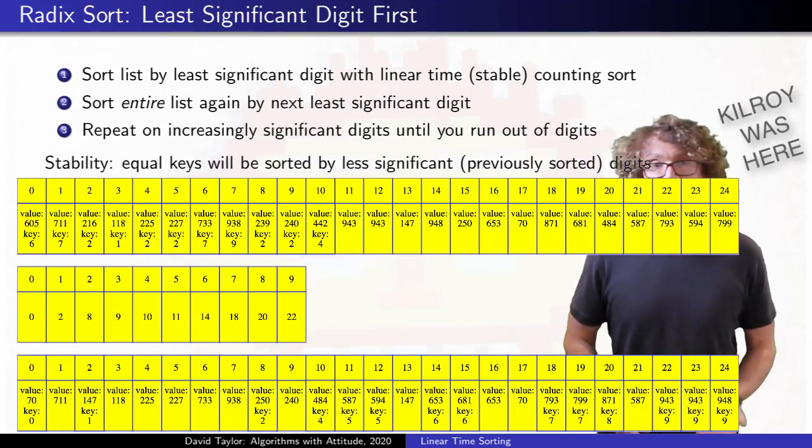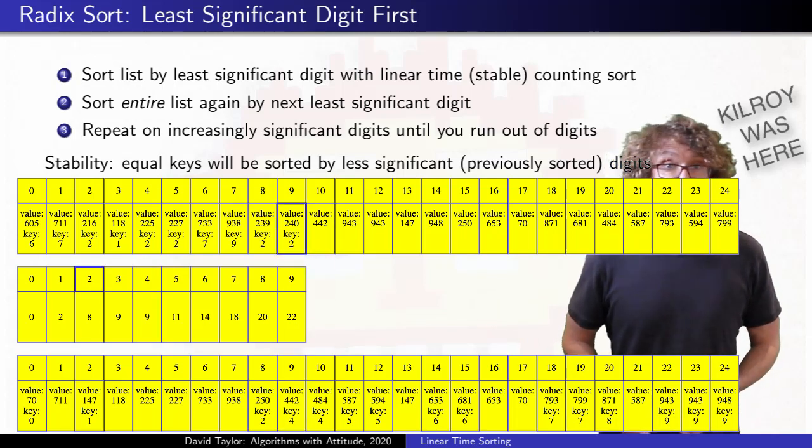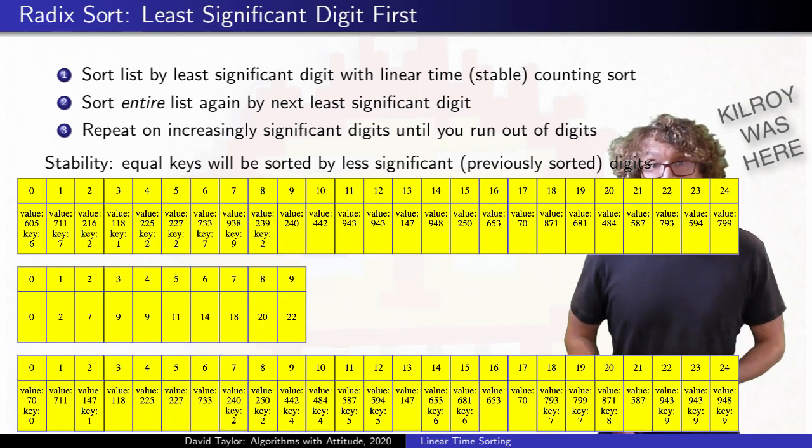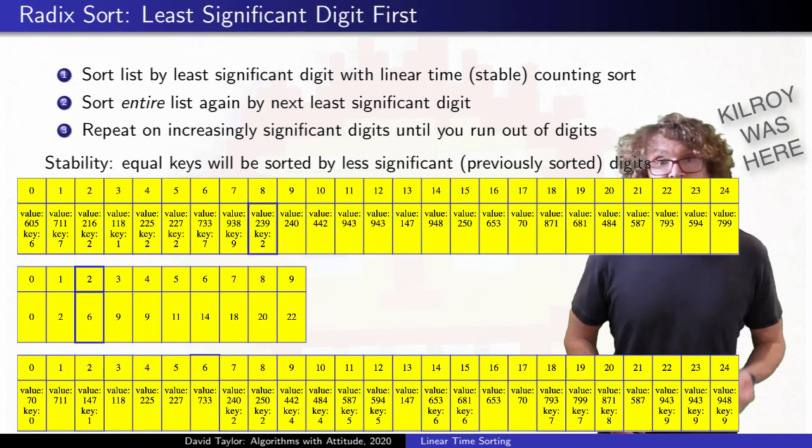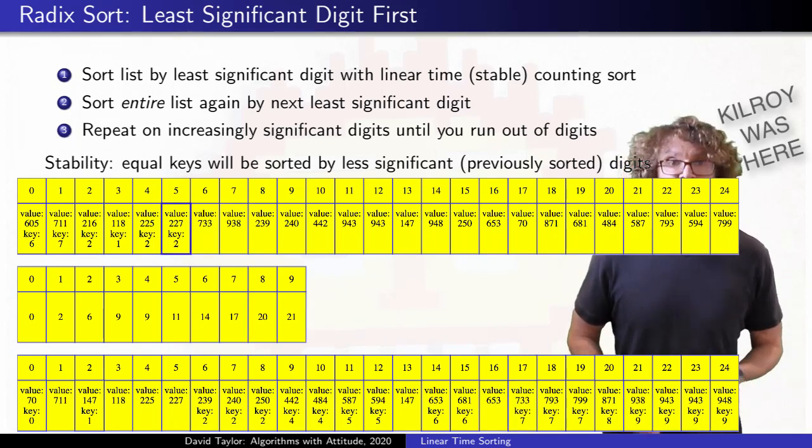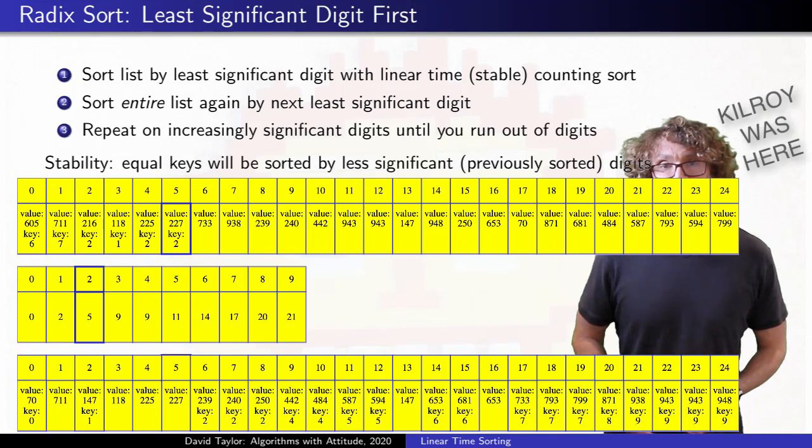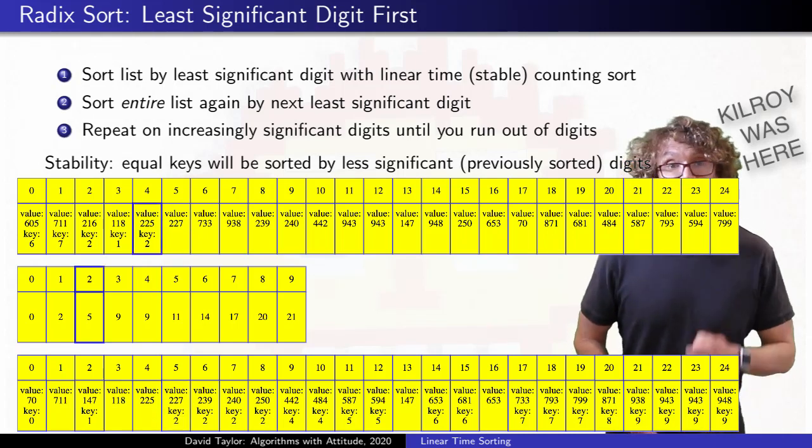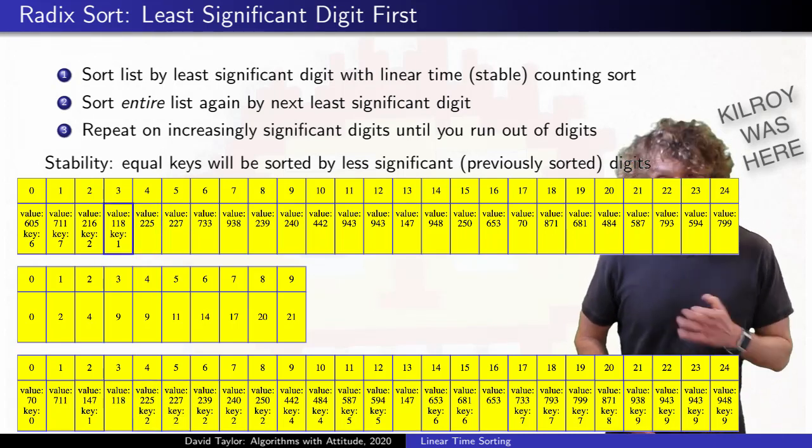For 793 and 799, the units digit sort put the 3 before the 9, and both the tens and hundreds digits sorts are stable, so 793 will end up before 799. It's important that counting sort is stable. Genius!